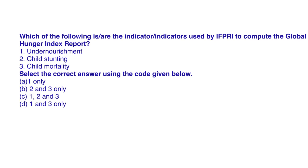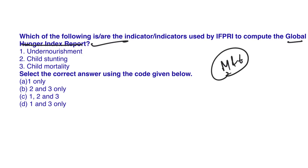The Global Hunger Index is designed to comprehensively measure and track hunger globally and by country and region. It is calculated every year by the International Food Policy Research Institute by highlighting the successes and failures in hunger reduction. This index provides insights into the drivers of hunger by raising awareness and understanding regional and country differences, with the main aim of bringing new actions to reduce hunger.